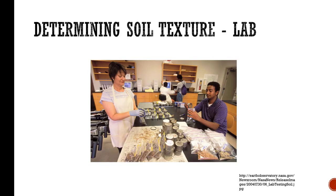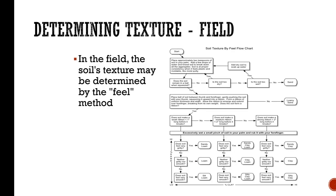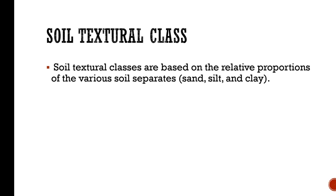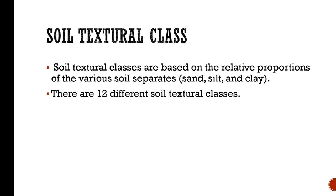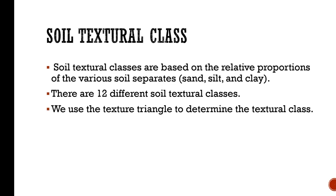You can have your soil texture tested in a lab — we're actually going to do this in class. Not exactly the way they do it in a lab, but we are going to do two different types of tests to determine soil texture on your soil. In the field you can do it by feel, and it's kind of a process of elimination. If you've done any dichotomous keys for determining plant identification, you'll be familiar with this type of situation. Soil textural classes are based on the relative proportions of sand, silt, and clay. There are 12 different soil textural classes, and we use the texture triangle to determine the textural class.